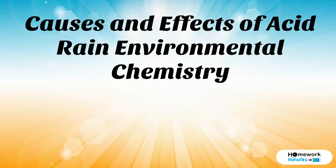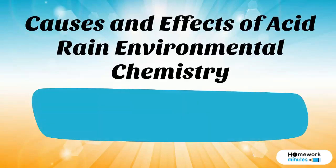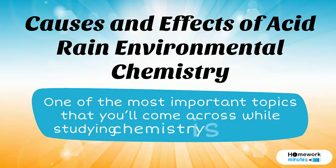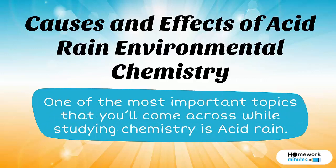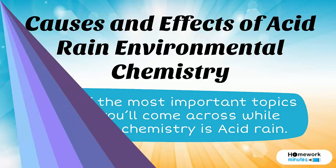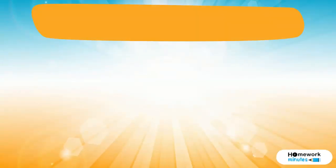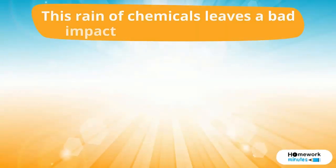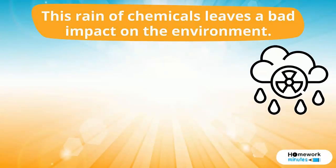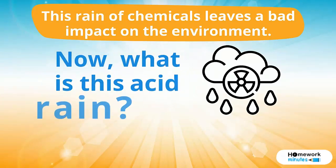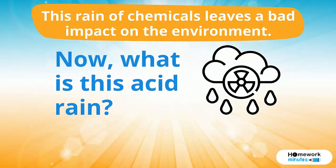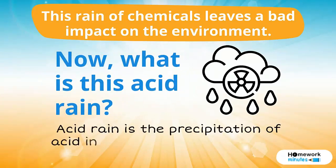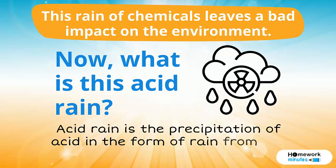Causes and Effects of Acid Rain: Environmental Chemistry. One of the most important topics that you'll come across while studying chemistry is acid rain. This rain of chemicals leaves a bad impact on the environment. What is this acid rain? Acid rain is the precipitation of acid in the form of rain from the clouds.